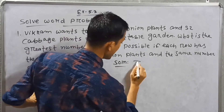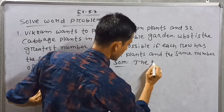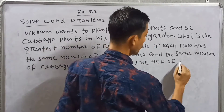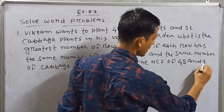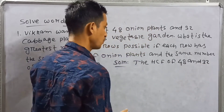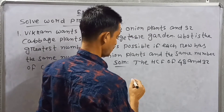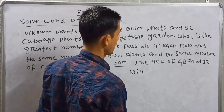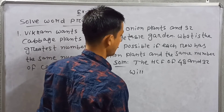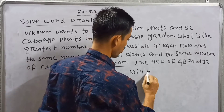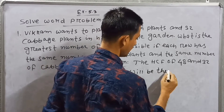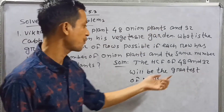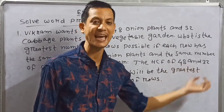Solution. The HCF — that's Highest Common Factor — the HCF of 48 and 32 will be the greatest number. We have to find the HCF of 48 and 32.